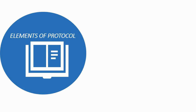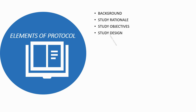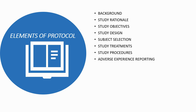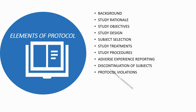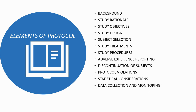Elements of a protocol. A protocol should include the following topics, but not limited to: background information, study rationale, study objectives, study design and selection, study treatments, study procedures, adverse experience reporting, discontinuation of subjects, protocol violations, statistical considerations, data collection and monitoring, and ethical and regulatory considerations.